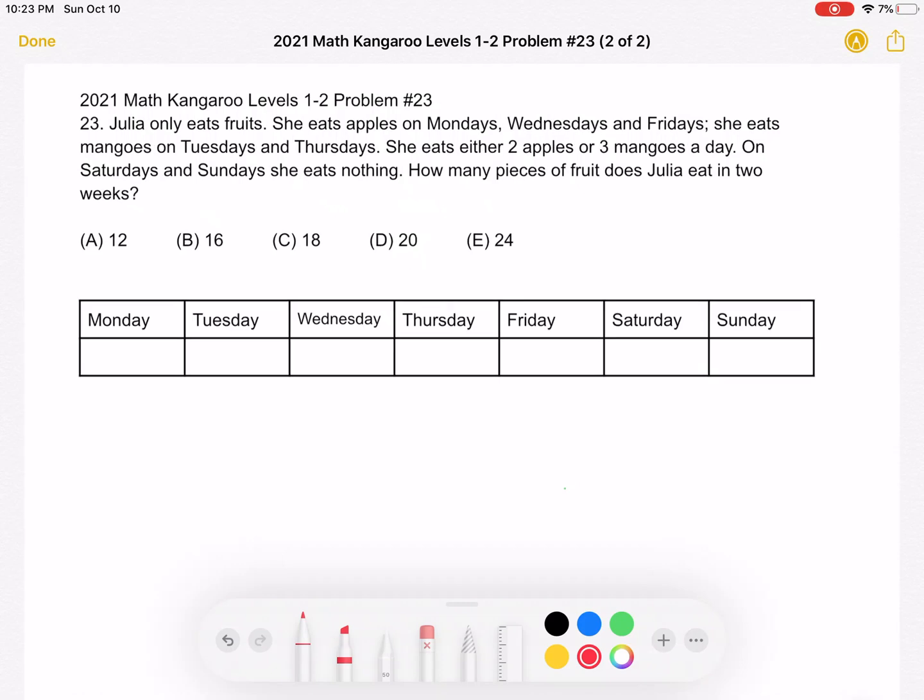So to start, I've made a table for the seven days of the week from Monday to Sunday, and we're going to try to determine how many pieces of fruit she eats each of these days, because that's what we're looking for in this problem.